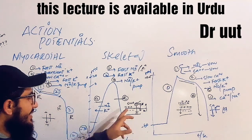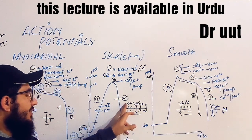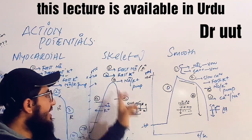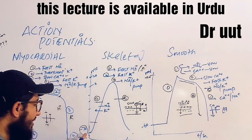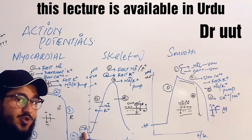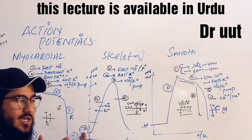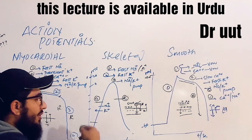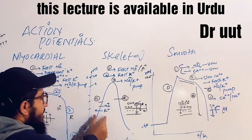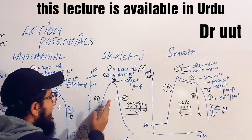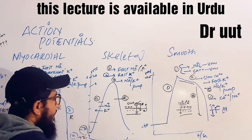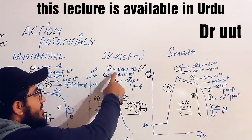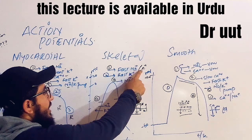Normally, outside of the cell is supposed to be positive and inside of the cell is supposed to be negative. In the case of skeletal muscle, when the stimulus reaches the resting membrane potential of minus 70, the cell will be awakened, a threshold will be reached, and depolarization begins due to the opening of the fast sodium and leaky potassium channels.